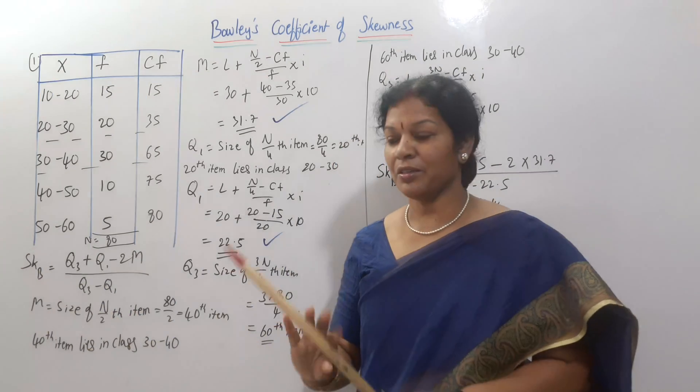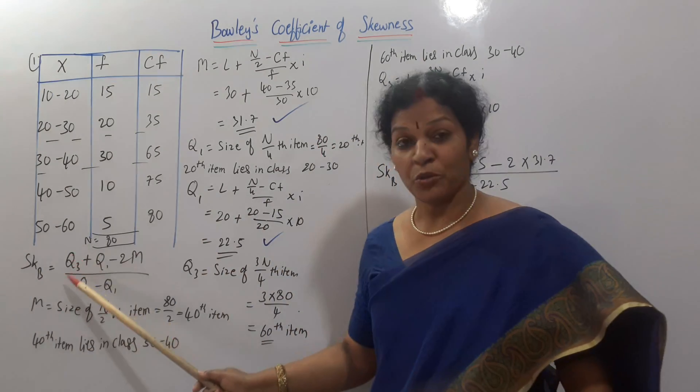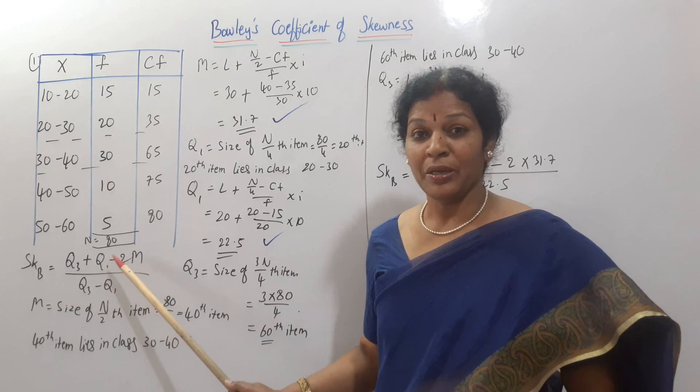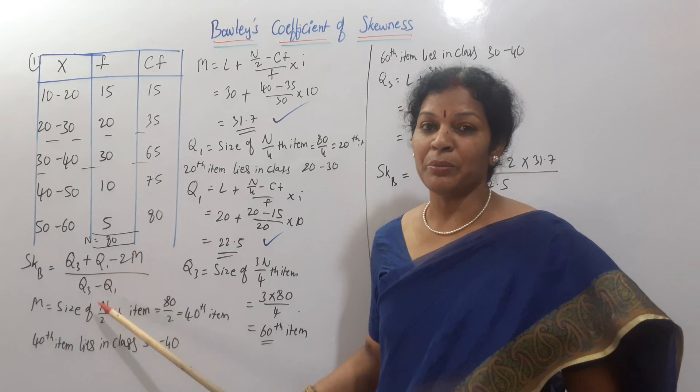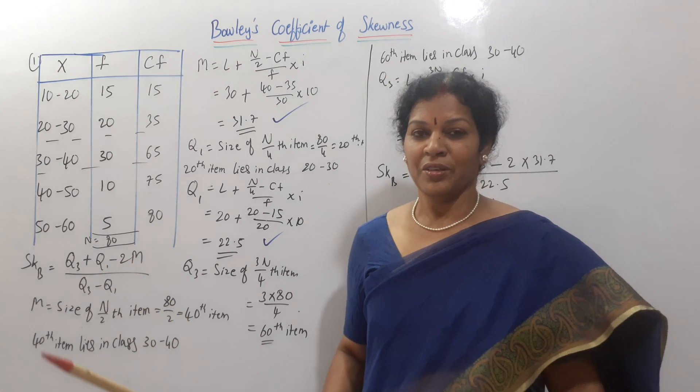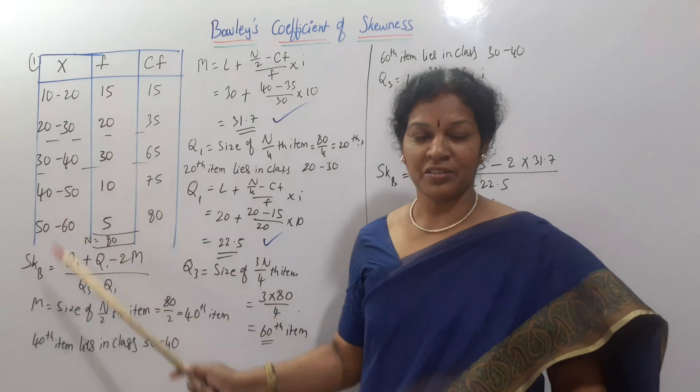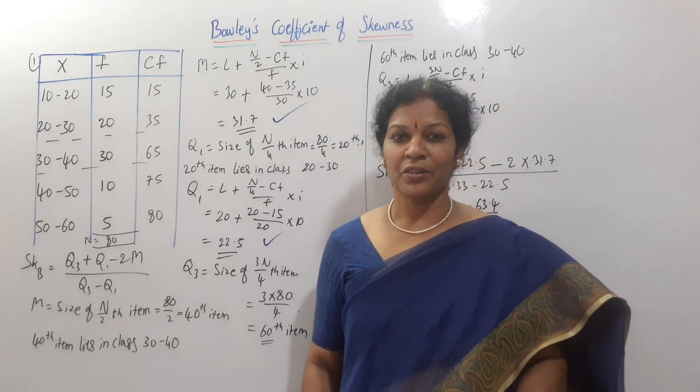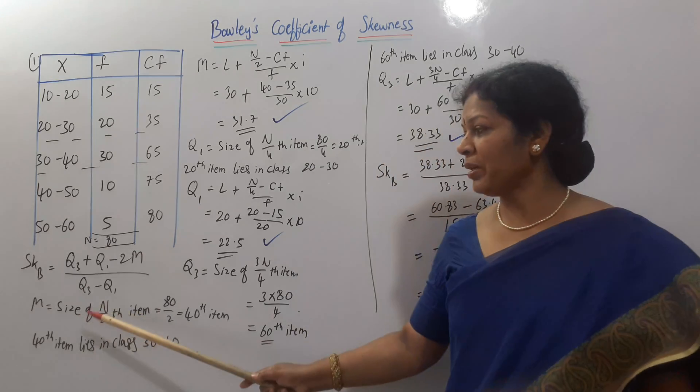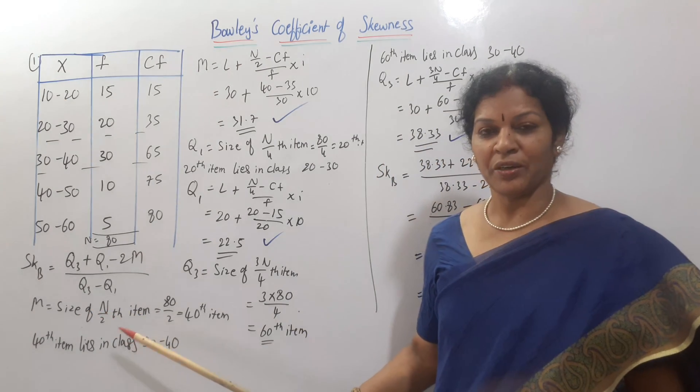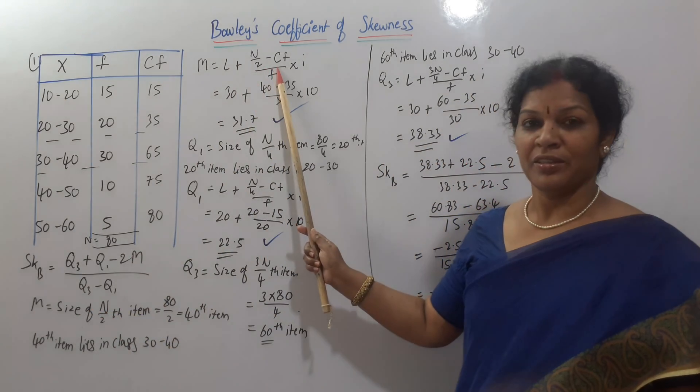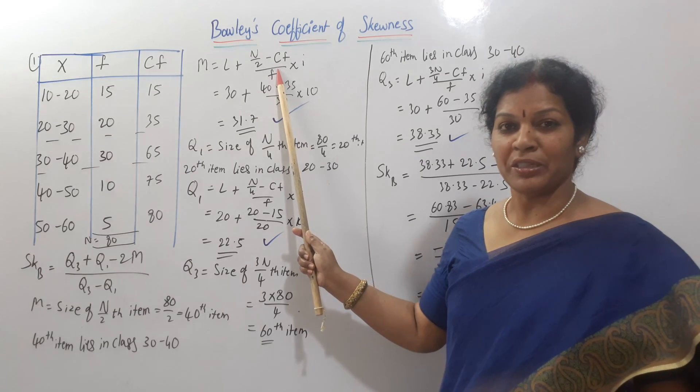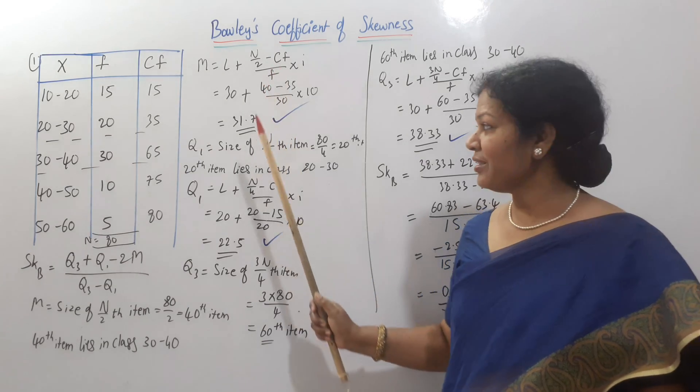Formula is here. Q3, corner is this one. Q3 plus Q1 minus 2M by Q3 minus Q1. When discrete series is given, first we have calculated CF. Then after that, median. Median first formula is N by 2th item. Then after that, final formula. L plus N by 2 minus CF by F into I.